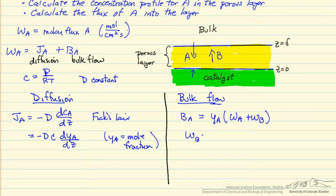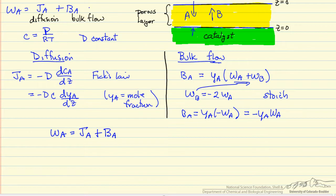WB is just minus 2 times WA from the stoichiometry, and we can substitute this into here, and we can get the bulk flow of A as the mole fraction times minus y of A. Now we determined up here,